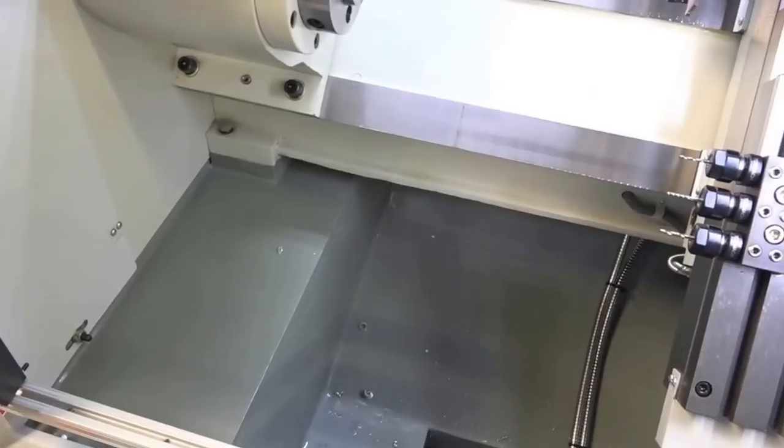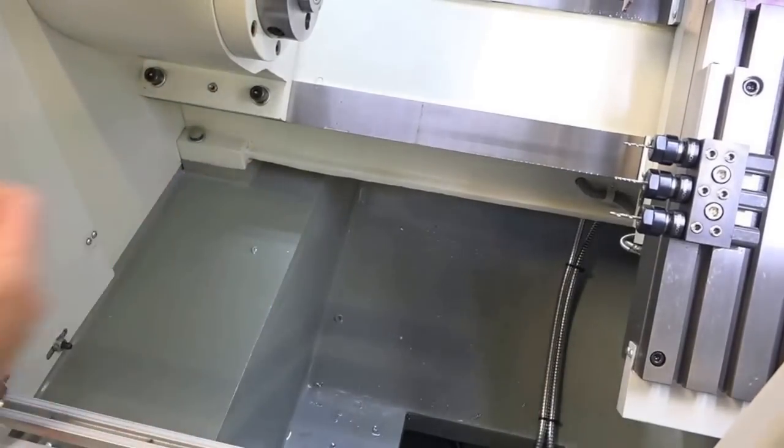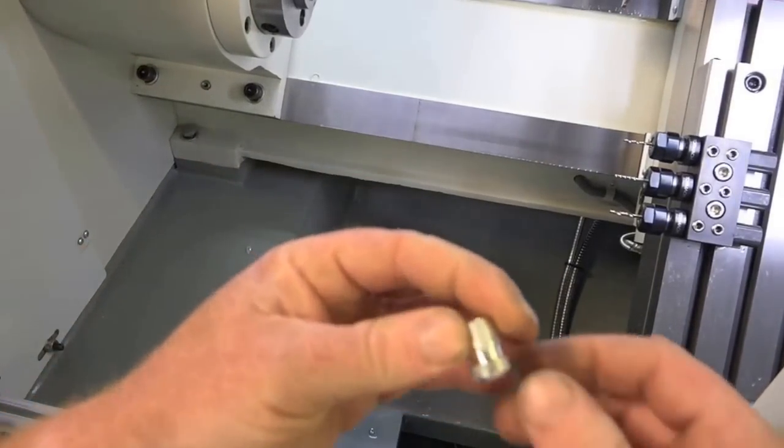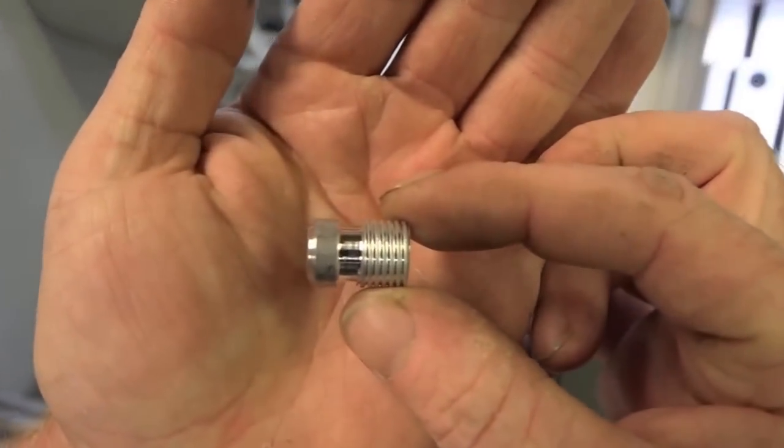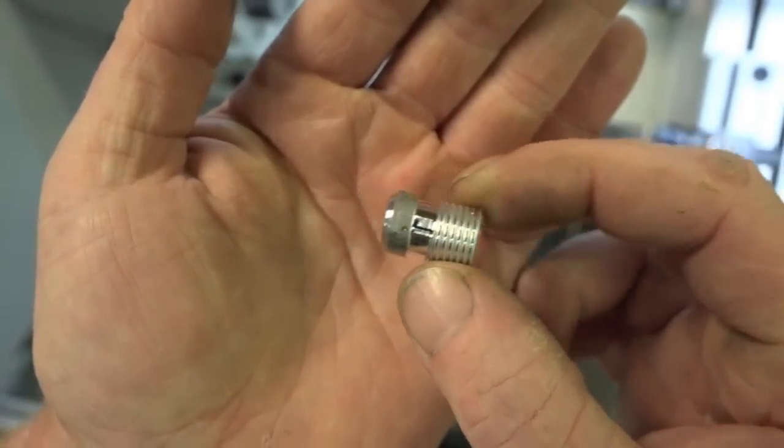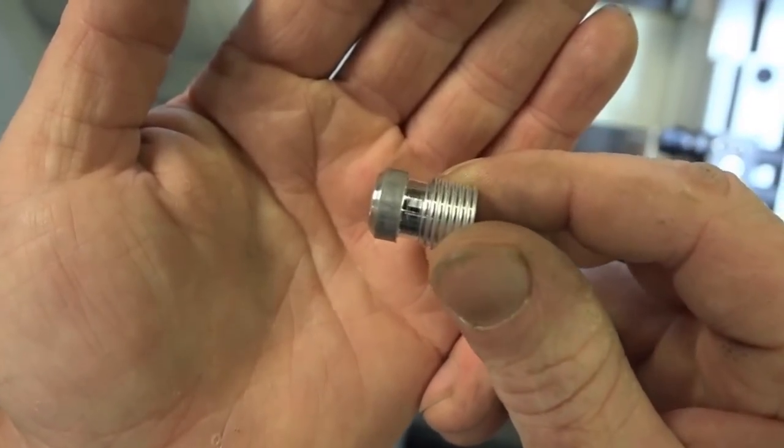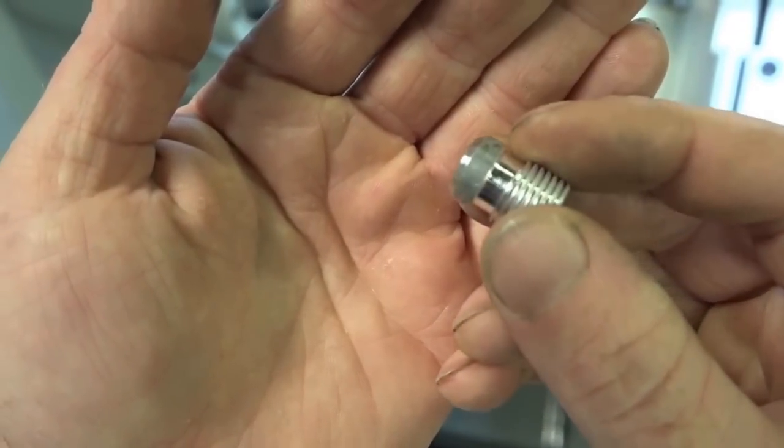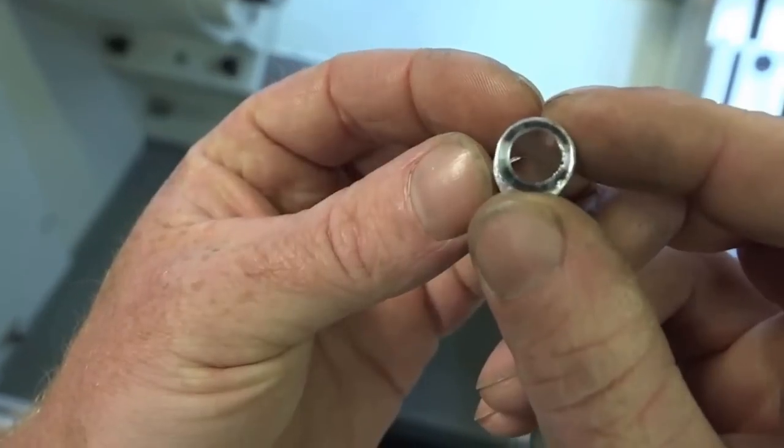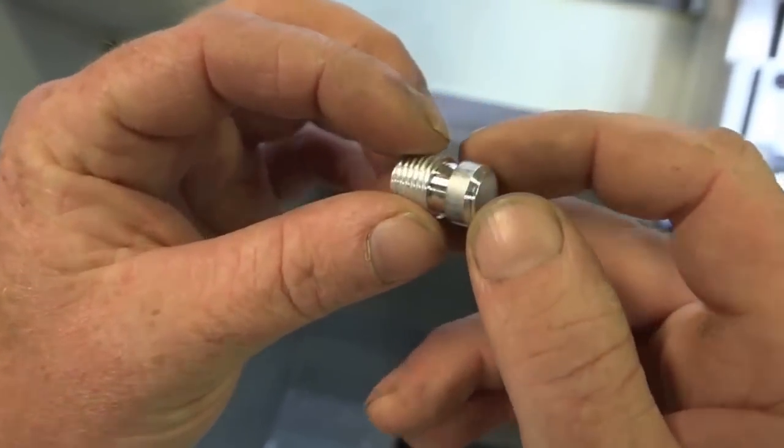There she is. Not too bad. Just a quick G-code off the conversational. It's a half-twenty thread, a little parting chamfer, a little thread relief. Could have faced it in a .45, but just a quick test for the GoPro.